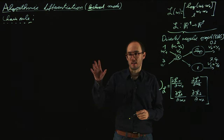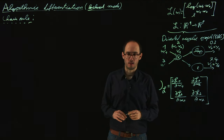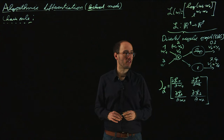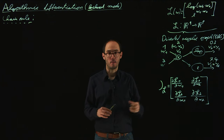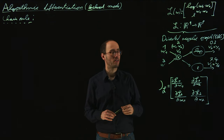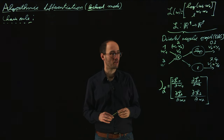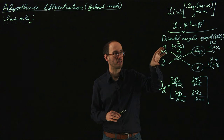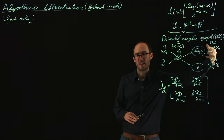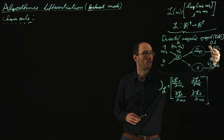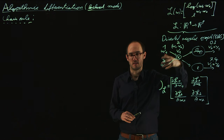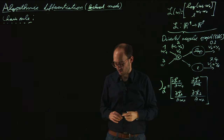Let's go to the details of the backward mode. The backward mode is basically, as the name already tells, the idea of calculating the derivatives not starting from the inputs of the function but starting at the outputs of the function and then going towards the inputs.